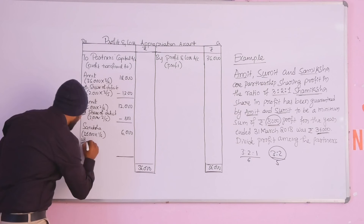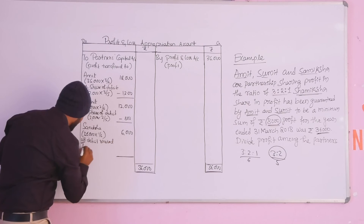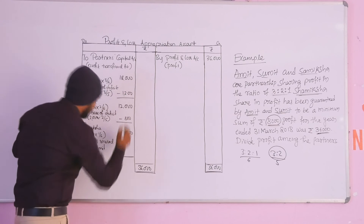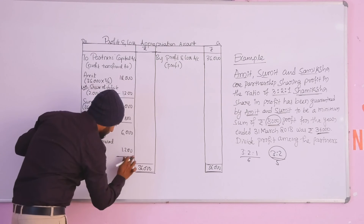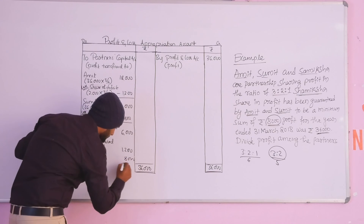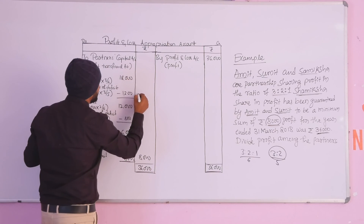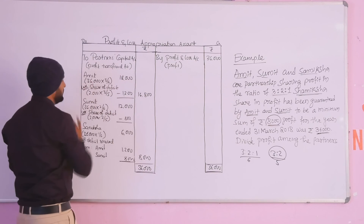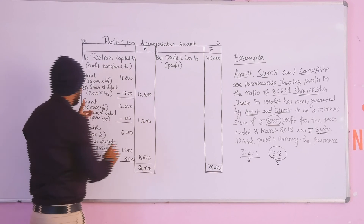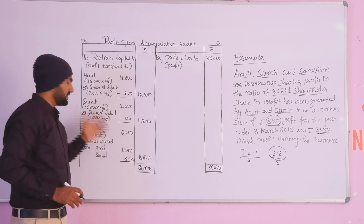So the deficit is received or recovered from: Amit — 1,200, and Sumit — 800. Total recovered: 2,000, which goes to Samiksha bringing her total to 8,000. Final profit distribution: Amit gets 18,000 − 1,200 = 16,800. Sumit gets 12,000 − 800 = 11,200. Samiksha gets 8,000. The guarantee of profit ensures Samiksha's minimum share. This is the solution.